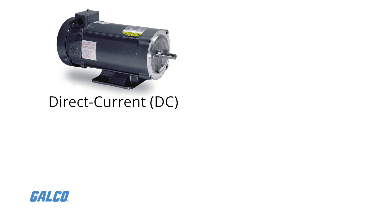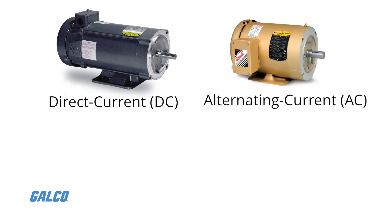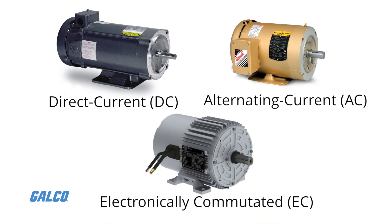DC or direct current motors and AC or alternating current motors are the most common types. A third option, the EC or electronically commutated motor, is a modern solution that might replace DC and AC motors.